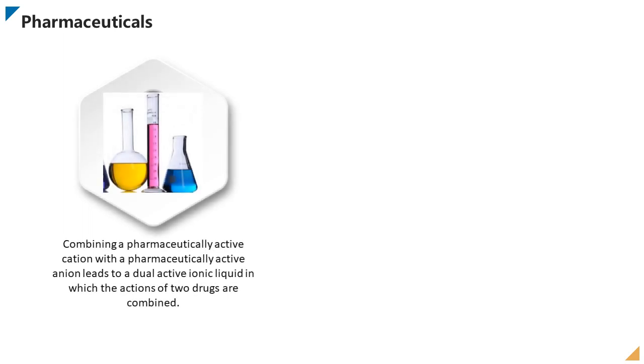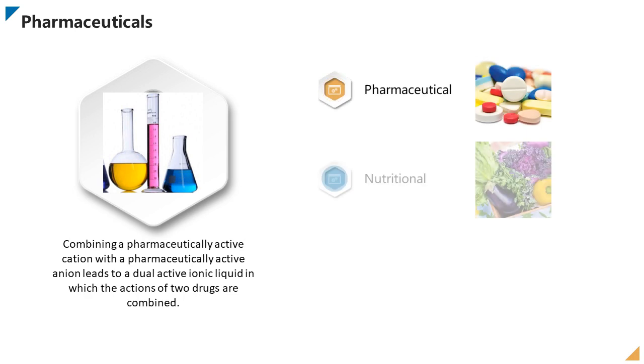Combining a pharmaceutically active cation with a pharmaceutically active anion leads to a dual-active ionic liquid, in which the actions of two drugs are combined. Ionic liquids can extract specific compounds from plants for pharmaceutical, nutritional and cosmetic applications, such as the antimalarial drug artemisinin from the plant artemisia annua.